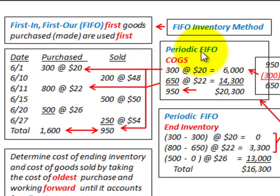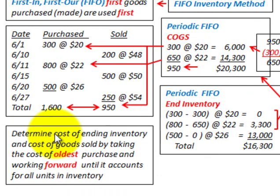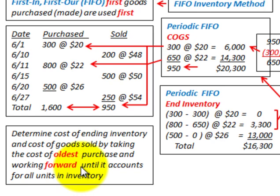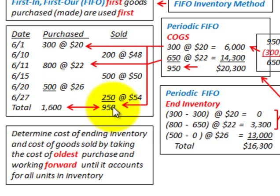We're going to start with the periodic FIFO method and compare it to the perpetual FIFO method. Using periodic FIFO, you determine the cost of the ending inventory and the cost of goods sold by taking the cost of the oldest purchase and working forward until it accounts for all the units in inventory and the sales made. With the periodic method, we're concerned with the total quantity sold for the period — not the particular quantity sold at a specific date. Our total quantity was 950 units sold and the total inventory purchased was 1,600 units.